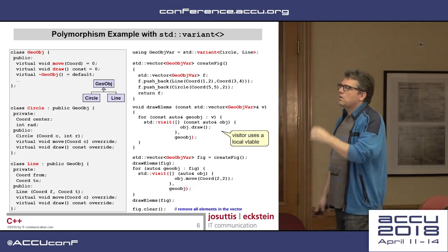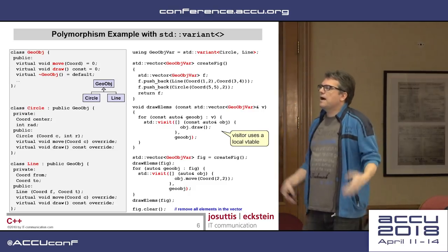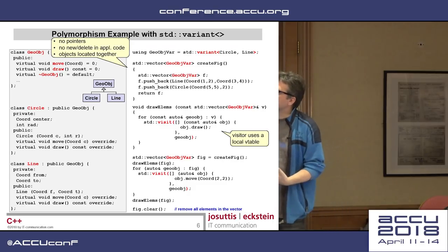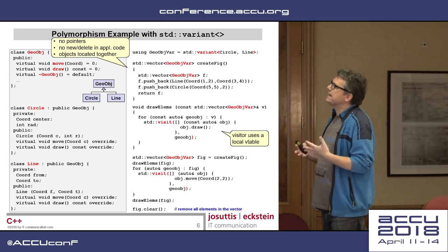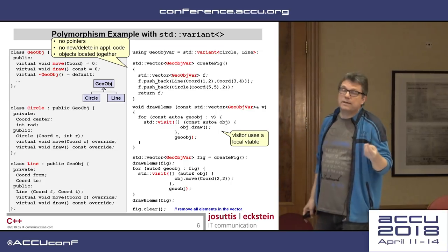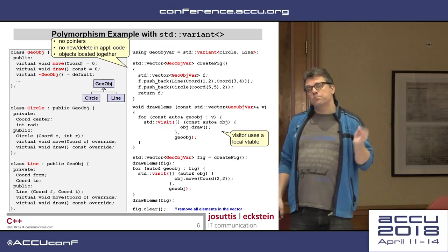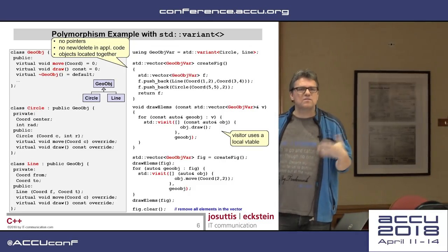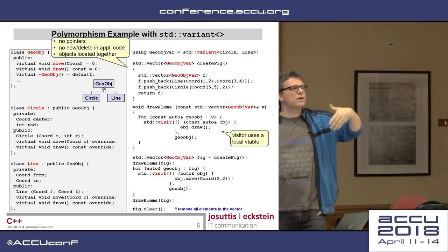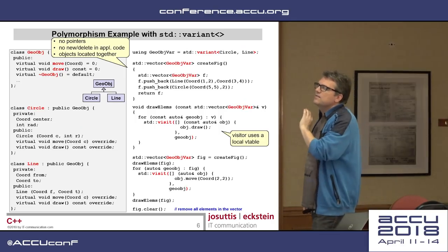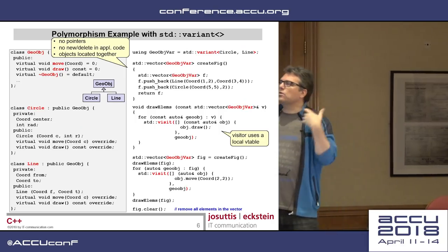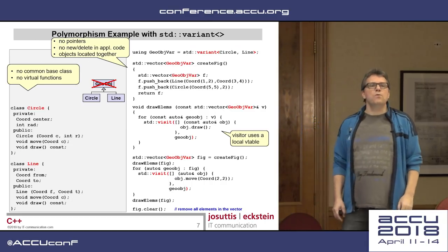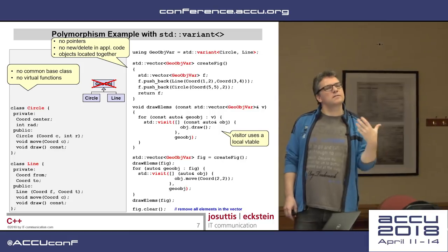So when I, at the end, no longer need all the elements in the vector, I simply call clear and that's it. So no pointers anymore involved. No new and delete in application code, underlying in the vector as used still. And the big benefit is the elements in the vector are located together, which is not the case if we have pointers referring to somewhere else. And this no longer needs polymorphism by inheritance at all. So strike your base class, remove each and every virtual, and it will still compile and work.